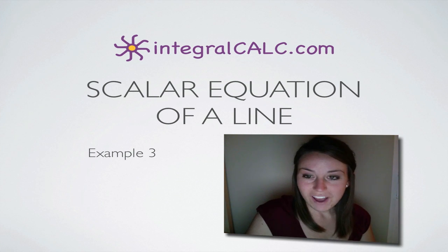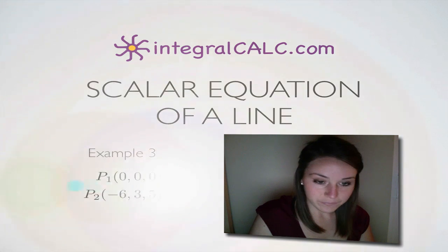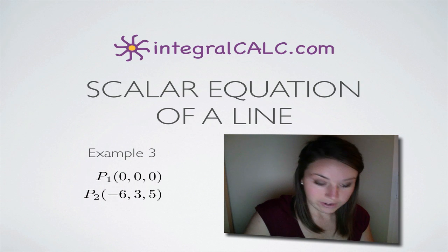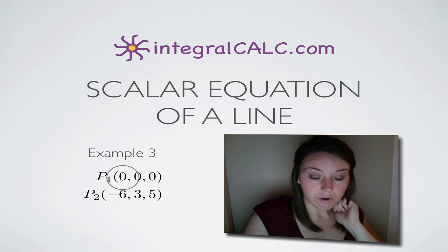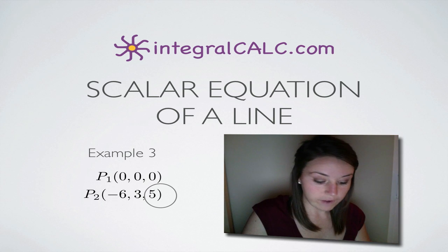Today, we're going to be doing another example of how to find the scalar equations of a line. In this problem, we're given two points: P₁ which is (0, 0, 0) and P₂ which is at (-6, 3, 5).